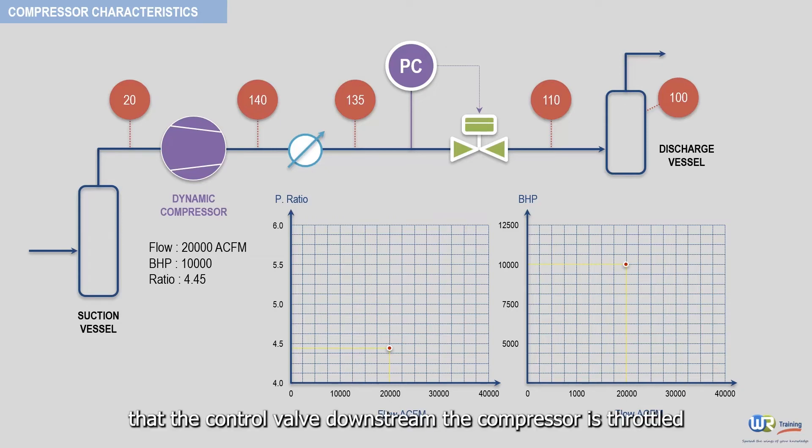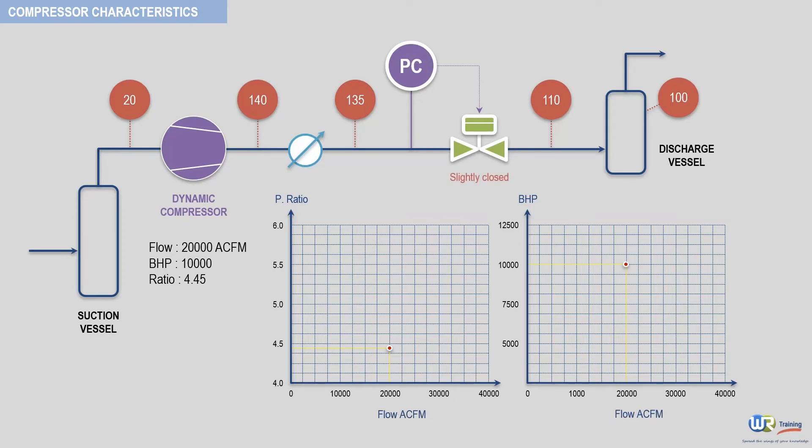Now, let's assume again that the control valve downstream the compressor is throttled. This action causes the compressor discharge pressure to rise to 180 psi, thus increasing the pressure ratio. The horsepower, however, decreases to 6000.